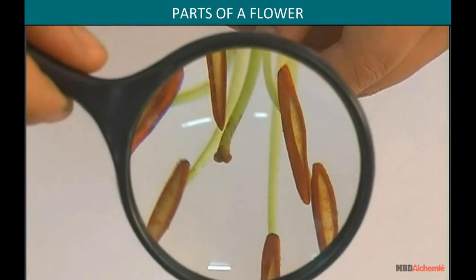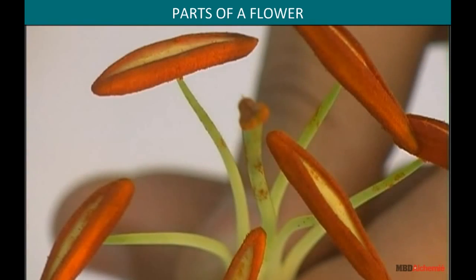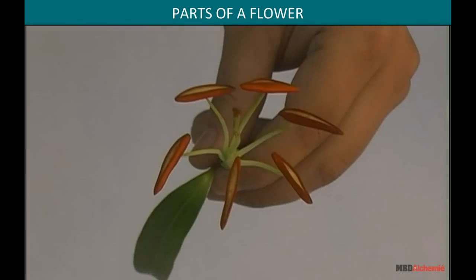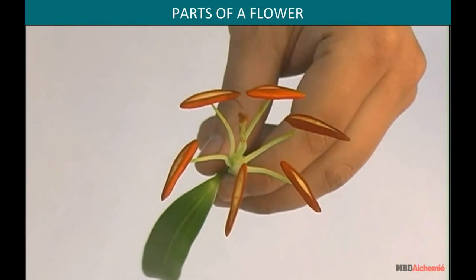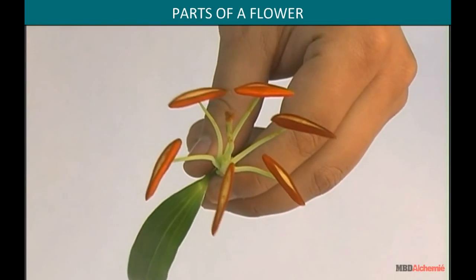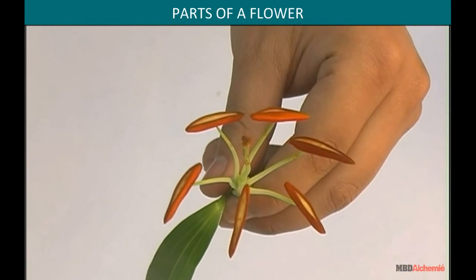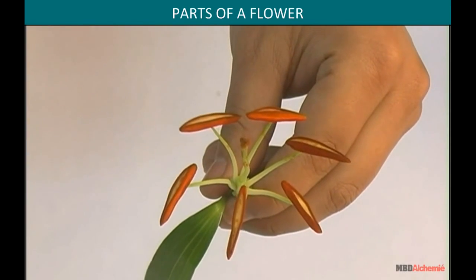Let us have a magnified view of the stigma and style. These are the male reproductive parts, which number six in total.